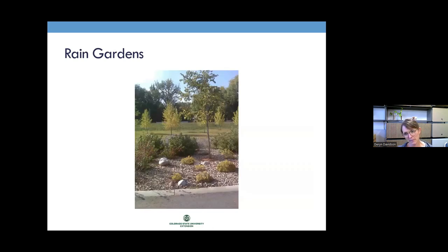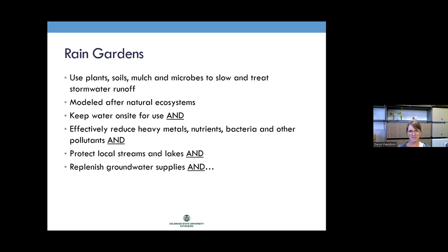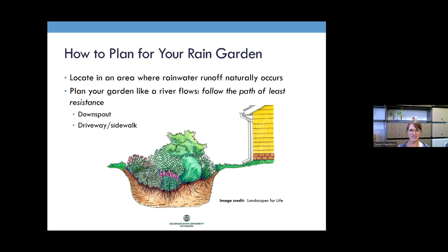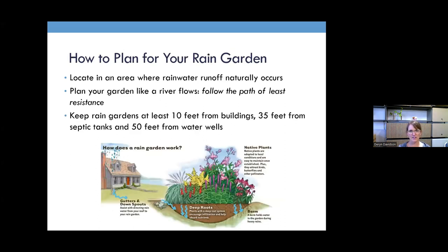French drains can address drainage issues or too much water at your foundation, and can also be used for passive rainwater harvesting — capturing water off your roof through gutters and downspouts underground and releasing it where you want it. Rain gardens are constructed to receive a lot of runoff, planted so they look like a garden but can be inundated by water, allowing it to infiltrate into the soil. A rain garden near a parking lot in Fort Collins uses plants, soils, roots, and microbes to slow and actually treat stormwater runoff. Keep rain gardens at least 10 feet from buildings, 35 feet from septic tanks, and 50 feet from water wells.